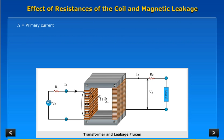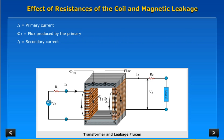I1 is equal to primary current. Phi1 is equal to flux produced by the primary. I2 is equal to secondary current. Phi11 is equal to primary leakage flux. Phi21 is equal to secondary leakage flux.